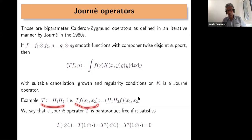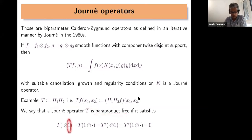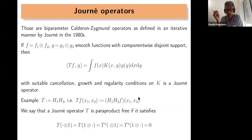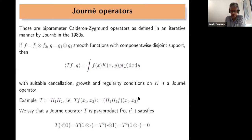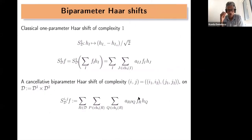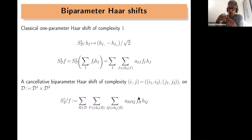The Journé operator is paraproduct-free if it delivers zero on functions that are constant in at least one parameter. To study Journé operators, there is a decomposition that relates any Journé operator to Haar shifts. This is why we use the Haar system to represent a general Journé operator.